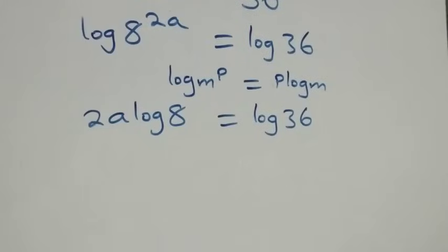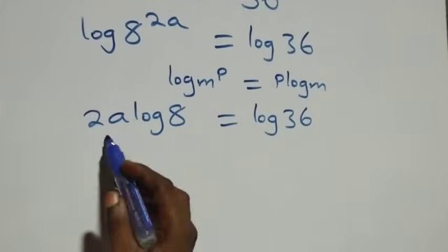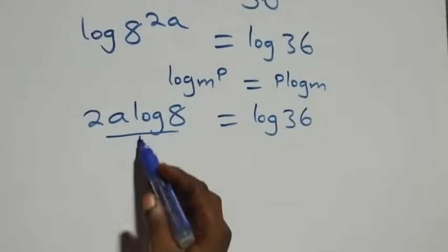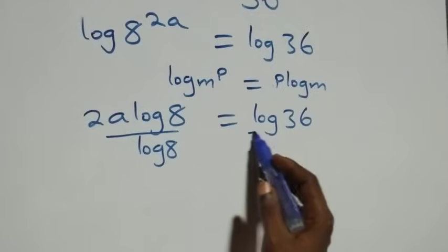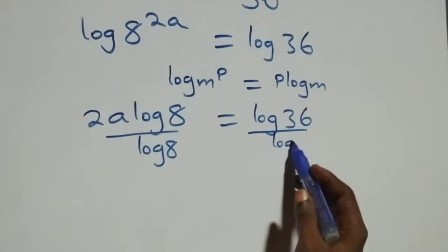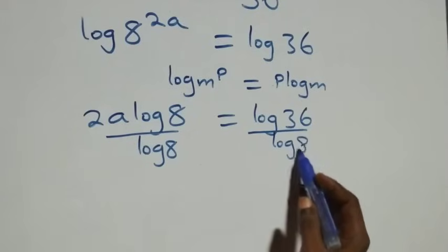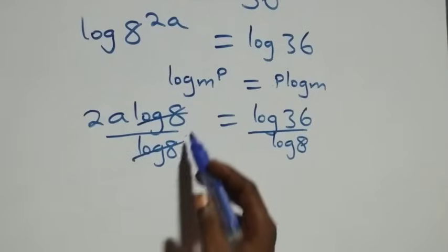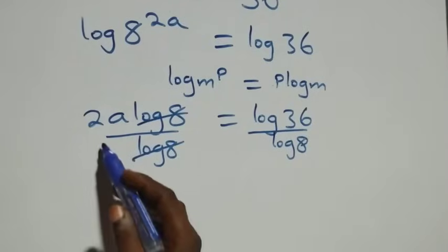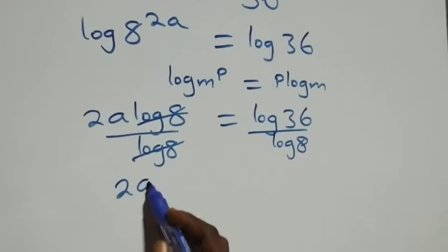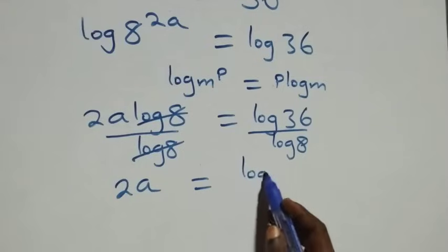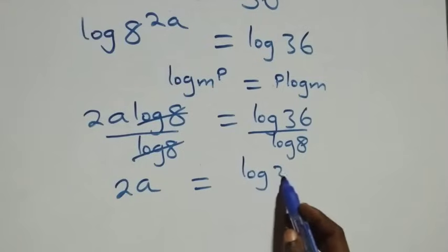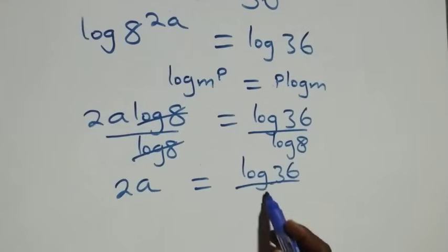From here we make a equals the subject. The next step: we divide both sides by log 8. Log 8 cancels on the left side, and we have 2a equals log 36 over log 8.